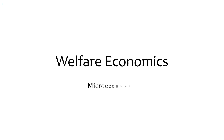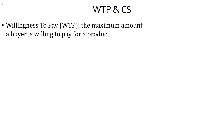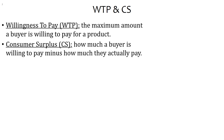Today's topic is welfare economics — when we say welfare, we mean well-being. A useful concept is willingness to pay (WTP), which is the maximum amount a buyer is willing to pay for a product; it reflects how much you value something. Consumer surplus is how much a buyer is willing to pay minus how much they actually pay. The formula is WTP minus P.